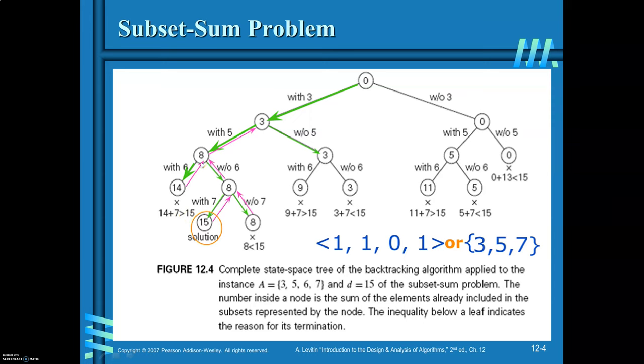Again, backtrack to the previous node. That means don't consider element 6 here. The summation now will still be 8 only. Try to add 7. When you add 7, you will be getting the solution equal to 15. That means, look at how you are getting the solution. Trace the path.